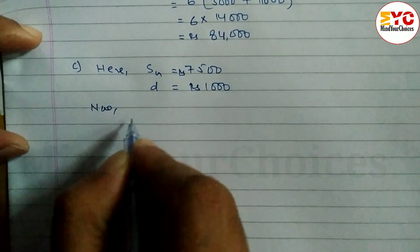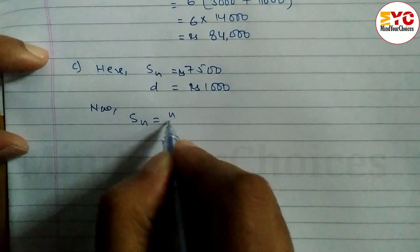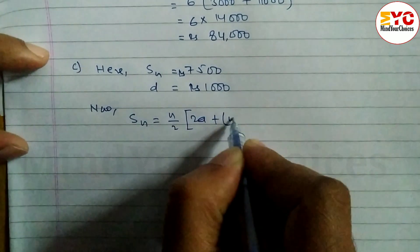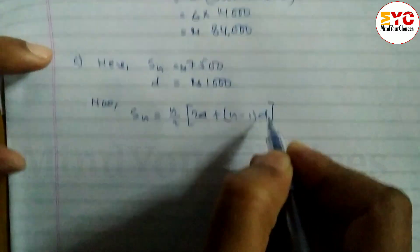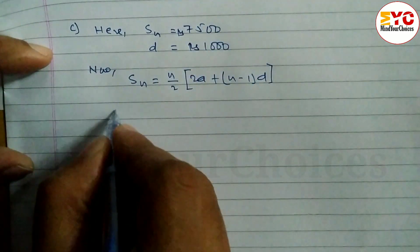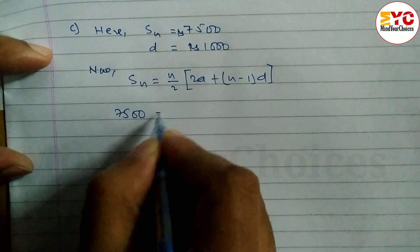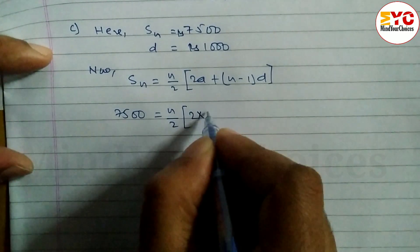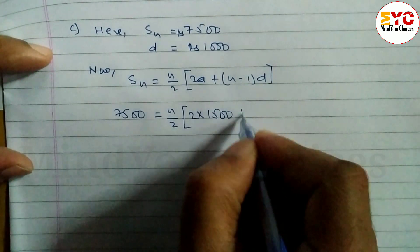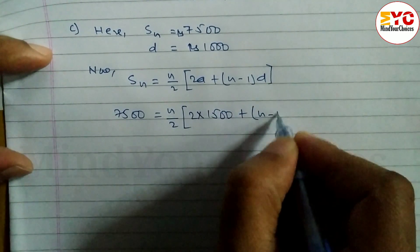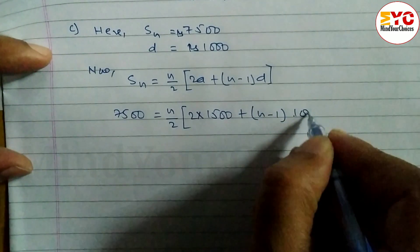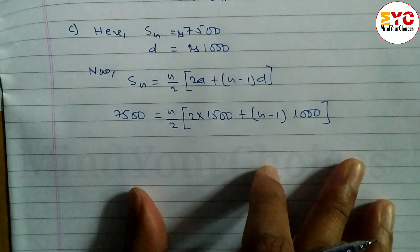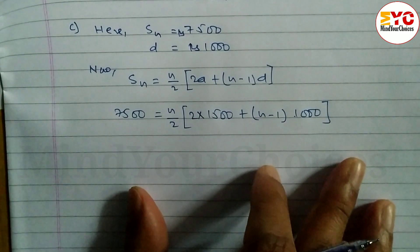Using the Sn formula: Sn = n/2 × (2a + (n−1)d). Substituting Sn = 7500, a = 1500, and d = 1000: 7500 = n/2 × (2×1500 + (n−1)×1000). Now we need to find the value of n.